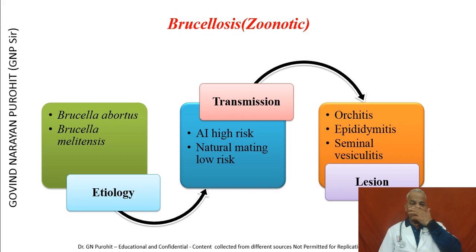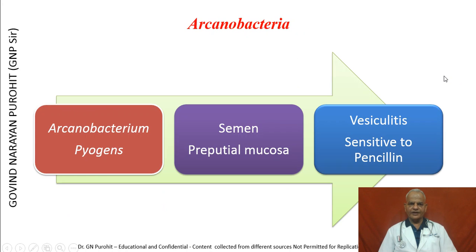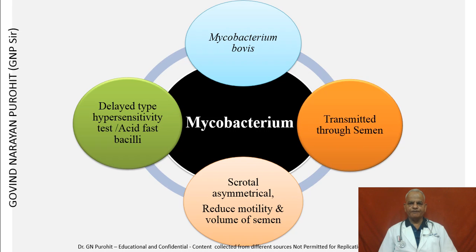Brucellosis may result in high-risk natural mating and can cause Orchitis, Epididymitis, Seminal Vesiculitis, and lesions in the bull, affecting semen quality. Arcanobacteria may affect semen or the preputial mucosa and may result in vesiculitis, but are sensitive to penicillin. Mycobacterium bovis may result in scrotal asymmetry, reduced motility and volume of semen, and is transmitted through semen.